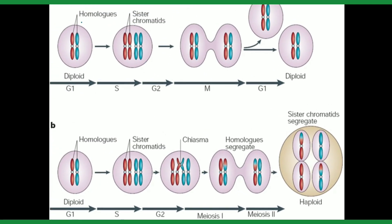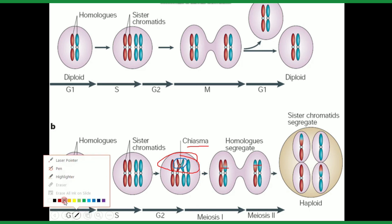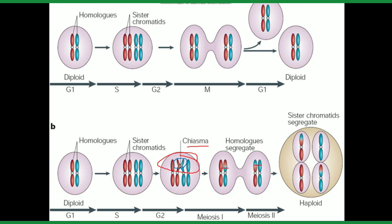There are two scenarios in meiosis. In one scenario, there are two chromosomes that become four with no crossing over occurring. In the other scenario, crossing over takes place — parts of the chromosomes separate and are exchanged. After parts exchange, one part attaches to the other chromosome, and then they separate. This is how recombination occurs in meiosis — recombination happens in meiosis, not mitosis.